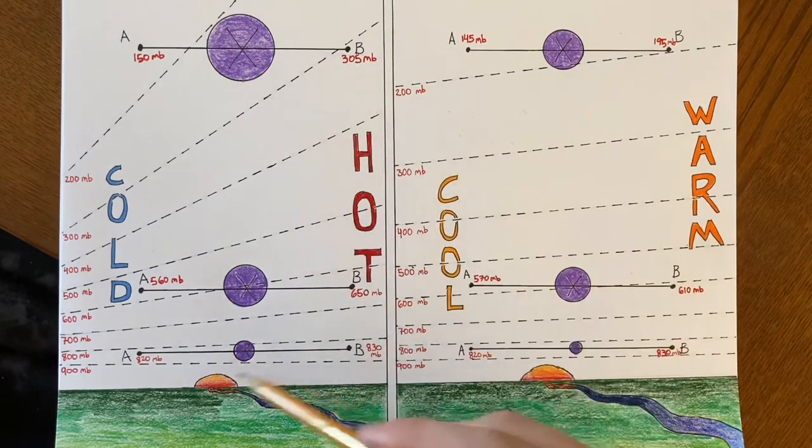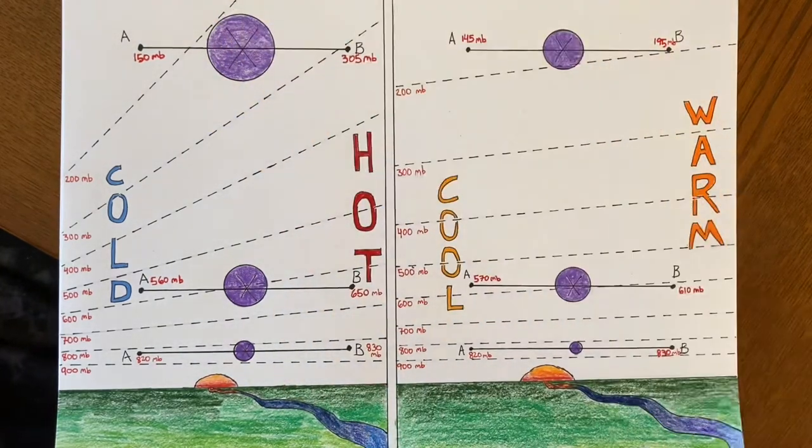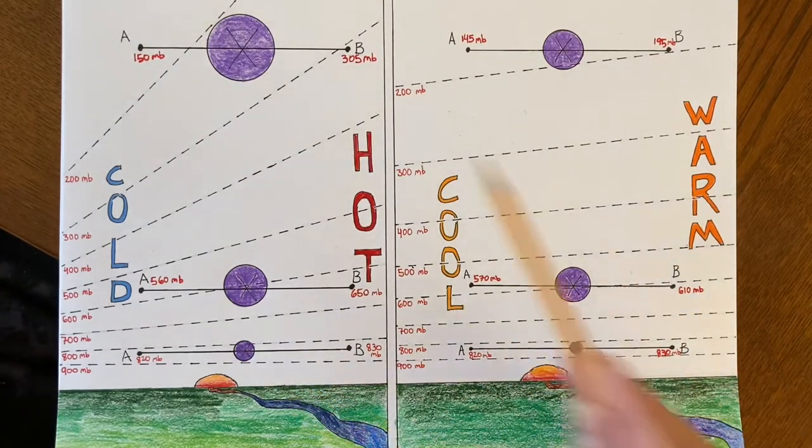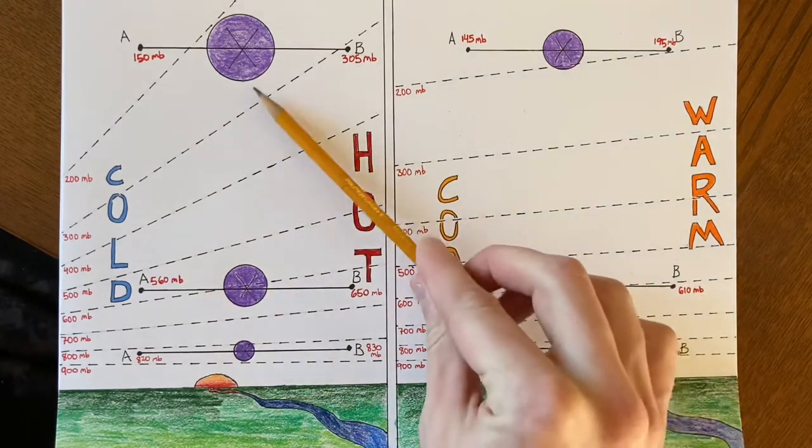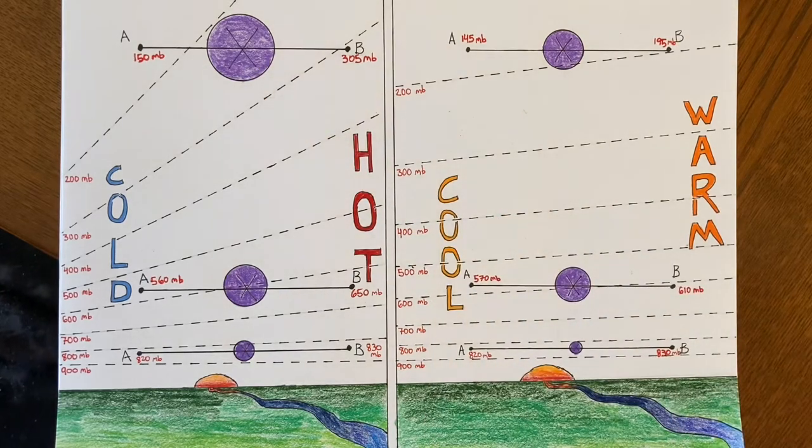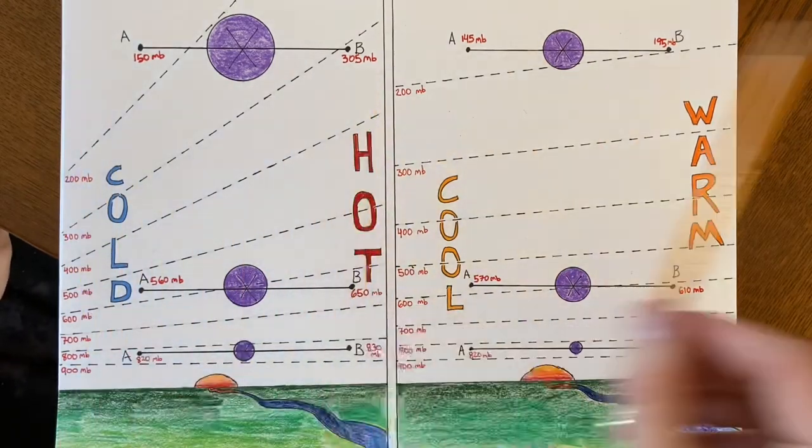So these purple circles here represent the strength of the wind. The X represents that they're going into the page, away from you. So this high speed, high winds up here, particularly strong winds, is essentially the jet stream.